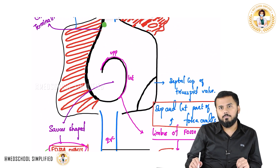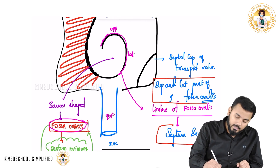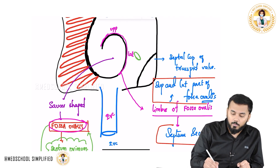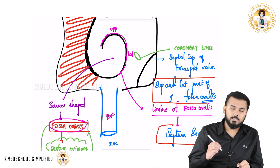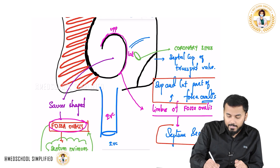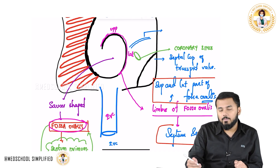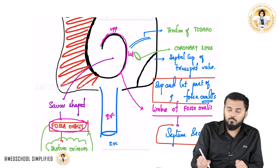There is a very important triangle which all of you have to know. Exactly here there is a small opening called as the coronary sinus. Just above this coronary sinus there is a ligament — you call it as the tendon of Todaro.